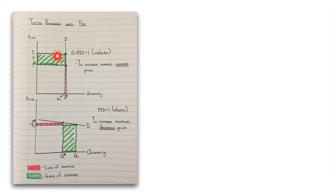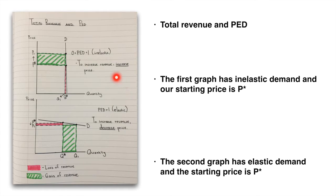Focus with me for a second on the top demand curve, which is inelastic, and we're going to see what happens when price increases from P star to P1. If you follow P star across the demand curve and we drop down, we go to Q star, so we understand P star, Q star is our total revenue.